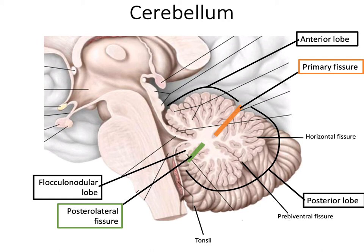We have a few additional structures listed here that you do not need to know for the exam. The horizontal fissure, previvential fissure, and tonsil are not required. Just focus on what's highlighted and boxed because we'll be focusing on more clinical aspects and the others aren't as necessary.